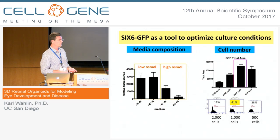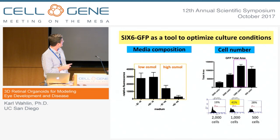With these tools in place, we wanted to address some very basic questions. We know there are a lot of microenvironment changes in the cell culture media that are probably suboptimal, so we looked at basic things like osmolarity. We know that stem cells grow in high osmolar solution, so we tested high versus low osmolarity and saw a lot more GFP-positive structures — a very easy thing to test.